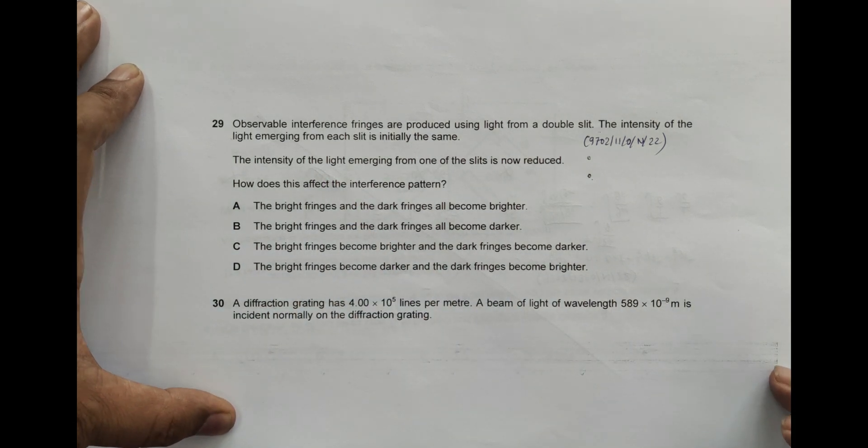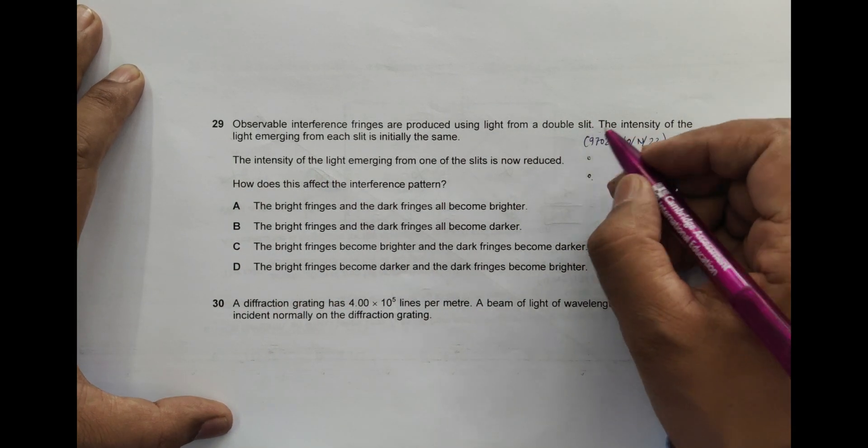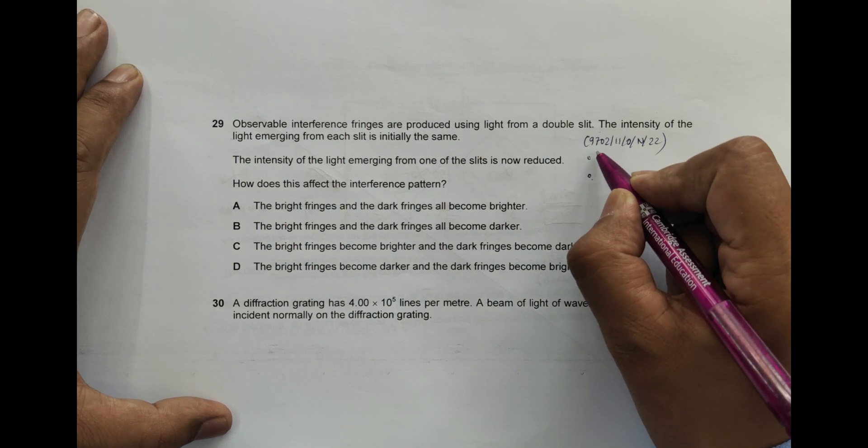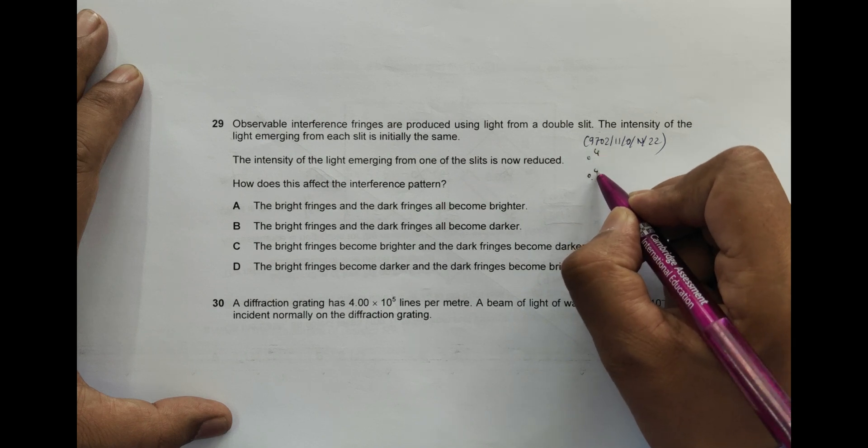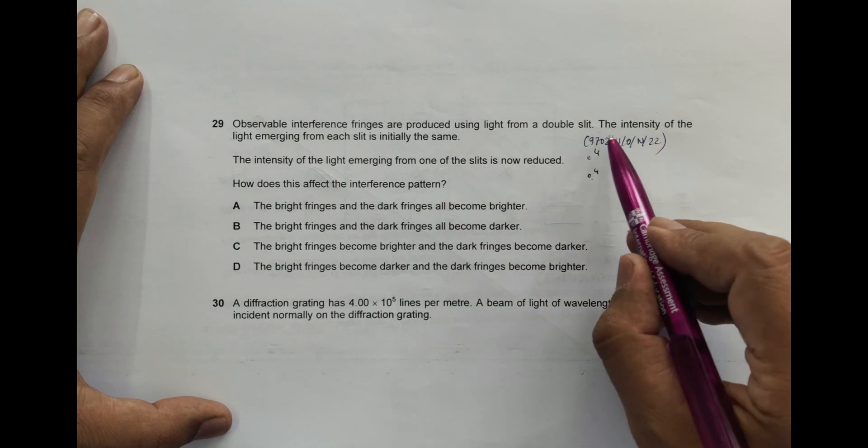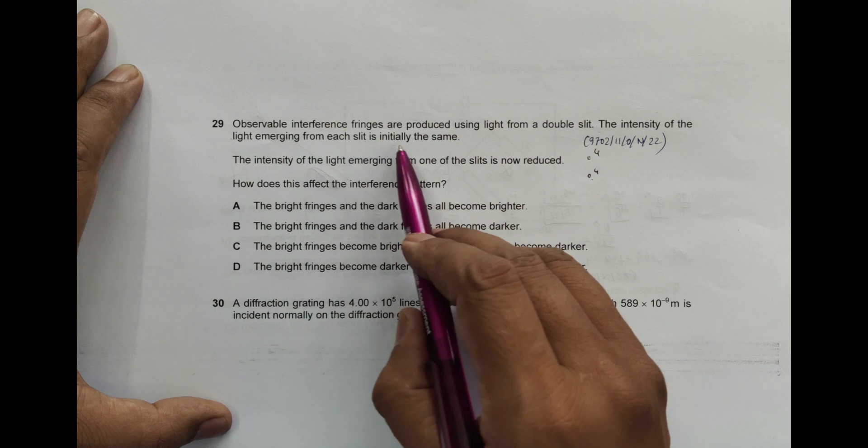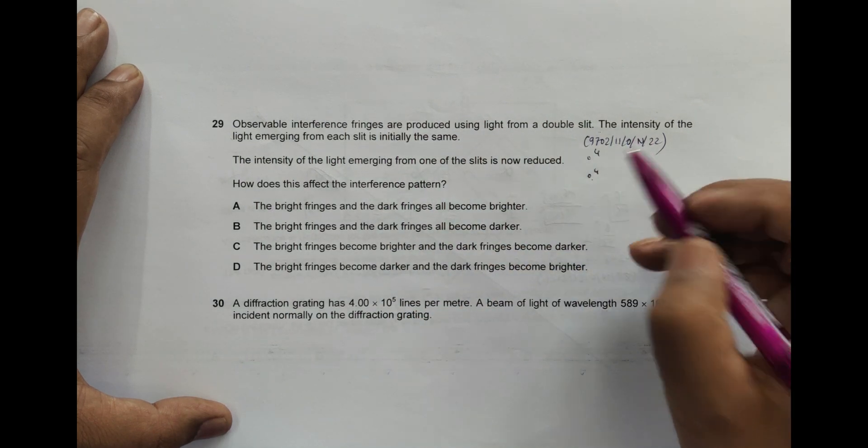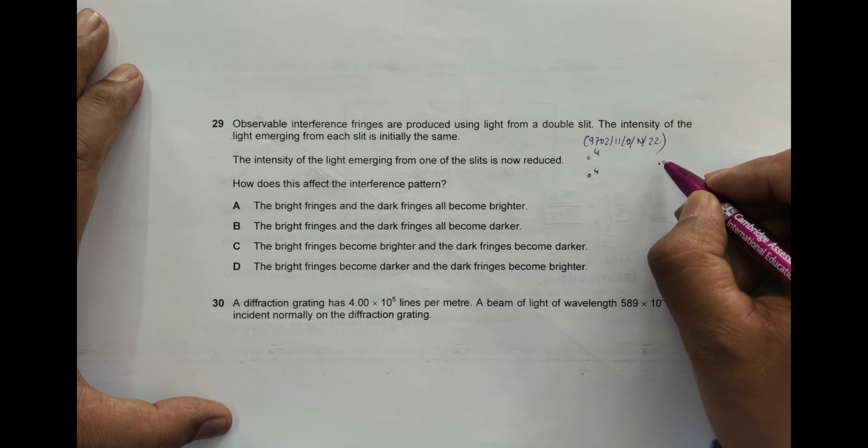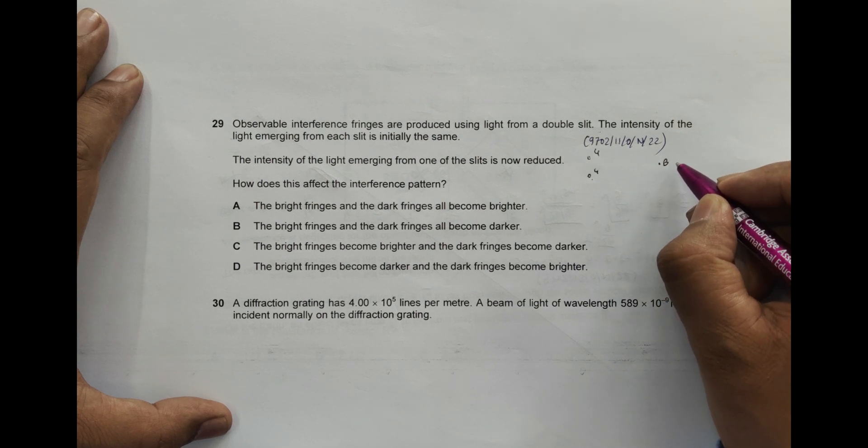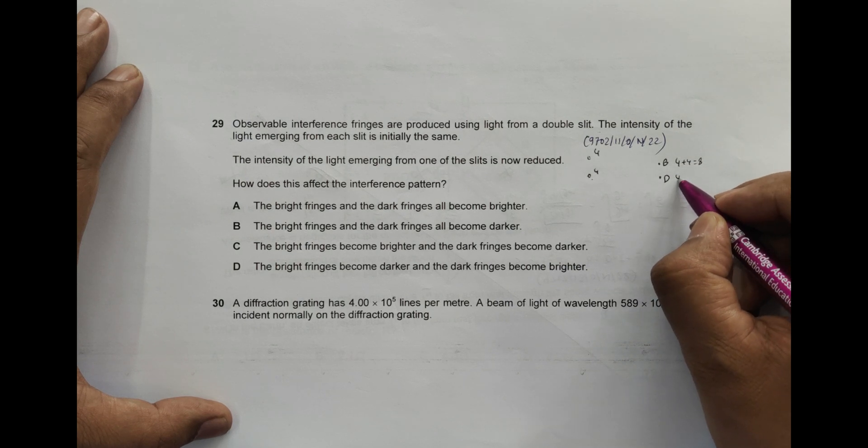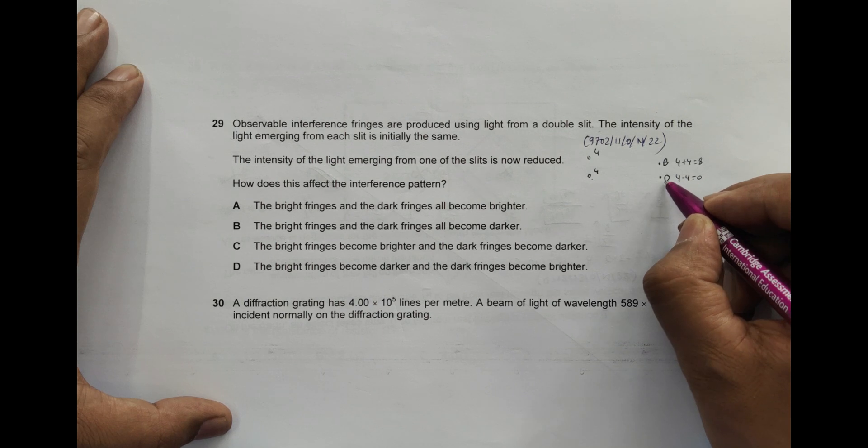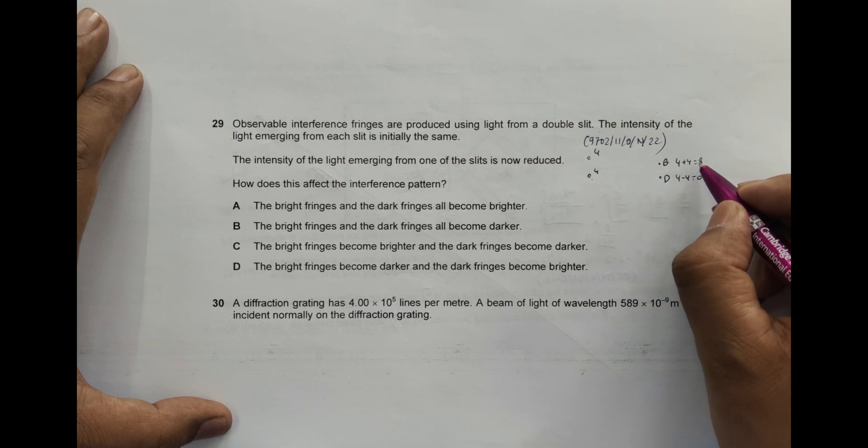Let's say the amplitude of the waves is four units and four units in the beginning. The intensity of the light emerging is the same, so amplitude is four and four. In the bright region that forms, the amplitude will be 4 plus 4 equals 8. In the dark region, the amplitude will be 4 minus 4 equals 0. So the dark region is totally dark and the bright region is bright.